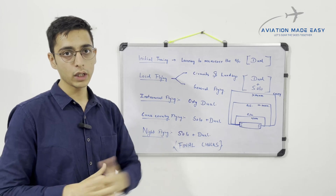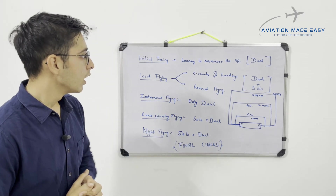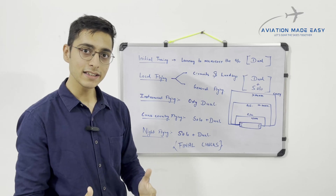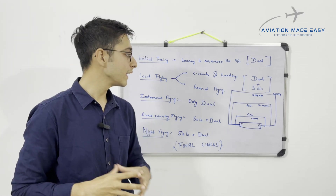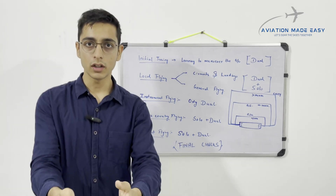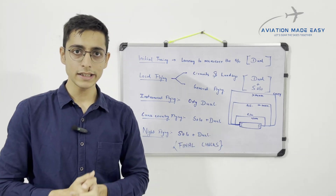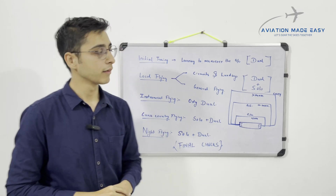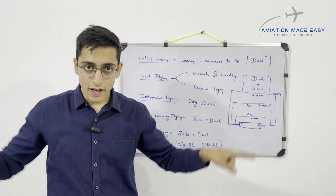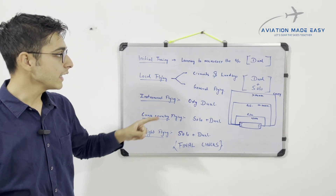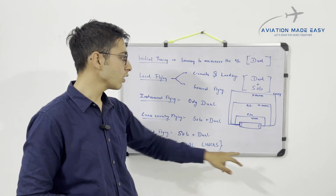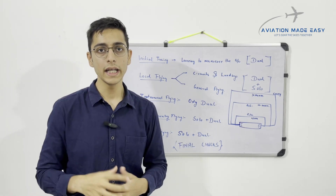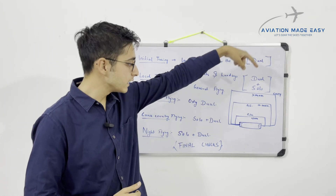Once you can manage circuits within 1.5 nautical miles, the next stage is general flying — going 10 to 20 nautical miles away from the runway and navigating back. After that comes cross-country flying, where you go beyond 100 nautical miles on one leg and return to the runway.